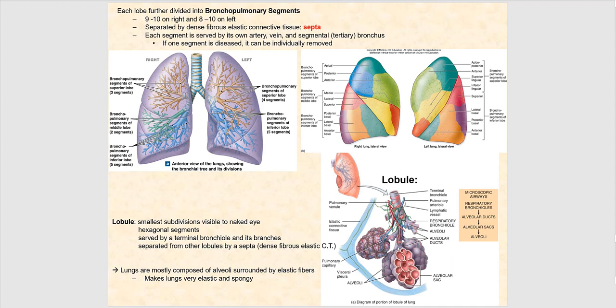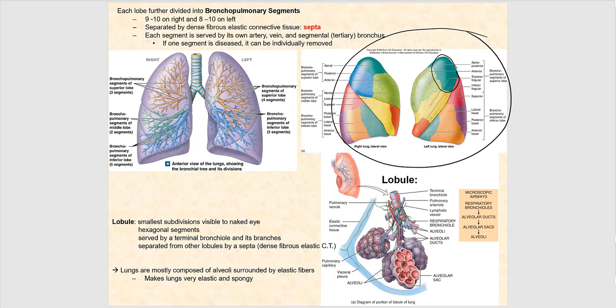Now let's talk about the bronchopulmonary segment, which compartmentalizes our lungs. Each bronchopulmonary segment is its own room. You can see it illustrated here with multiple colors, each color representing a bronchopulmonary segment. The advantage of this compartmentalization is that if one segment is diseased, the physician or surgeon can remove just that segment, and the remaining bronchopulmonary segments stay intact.